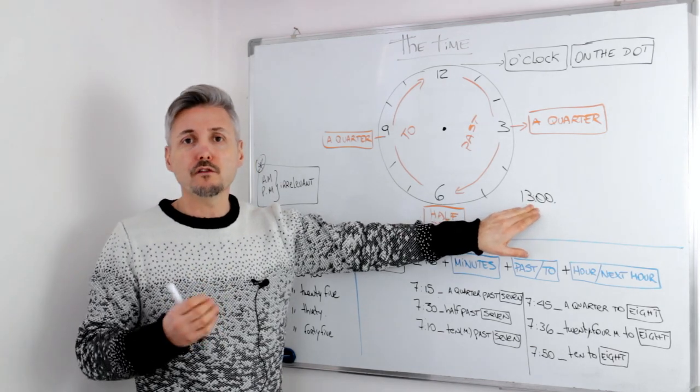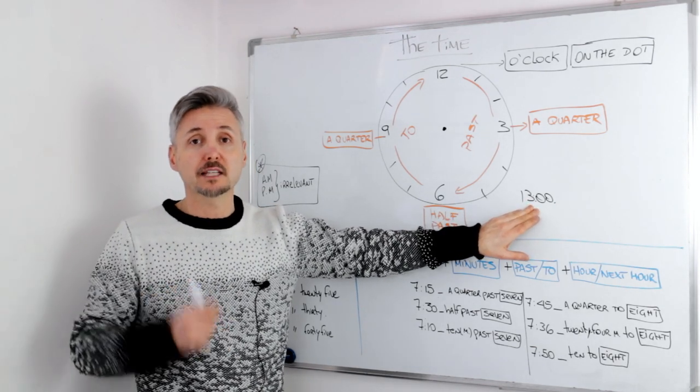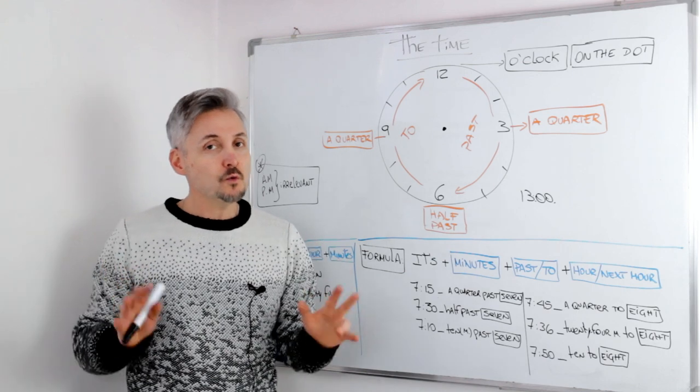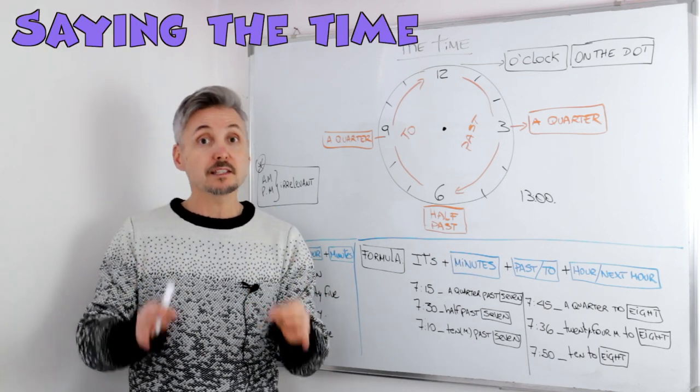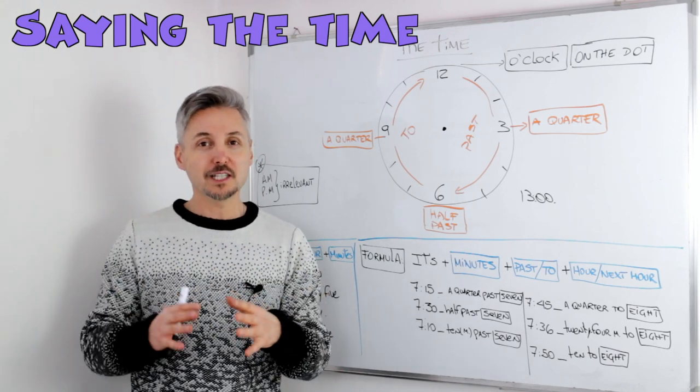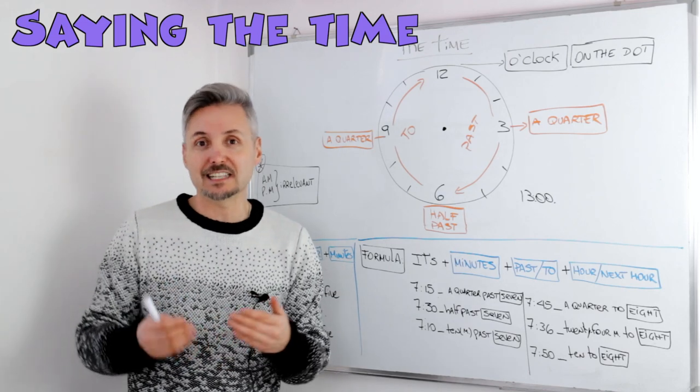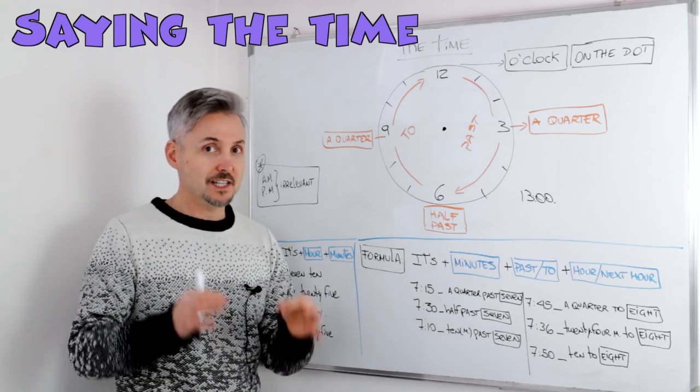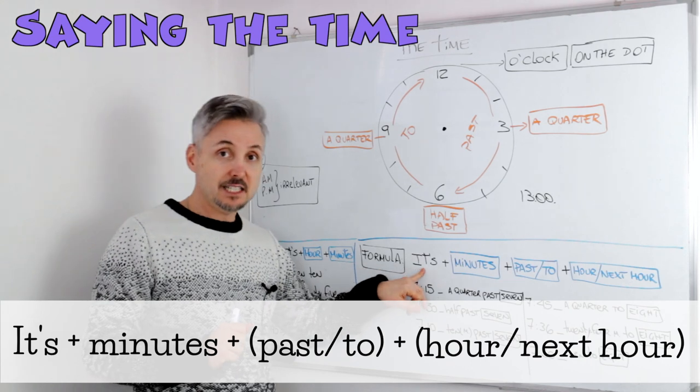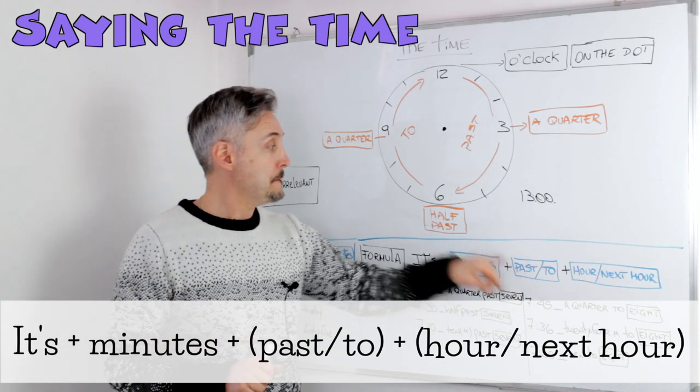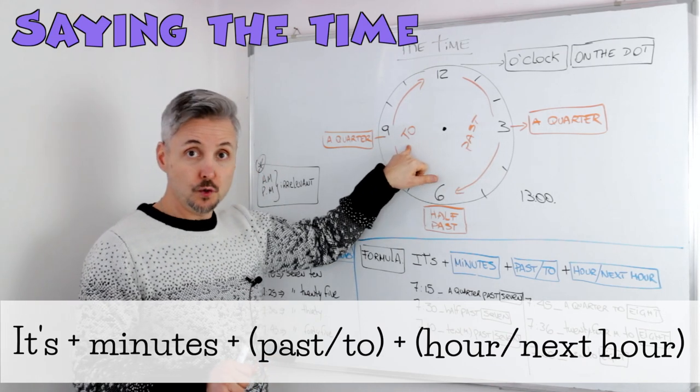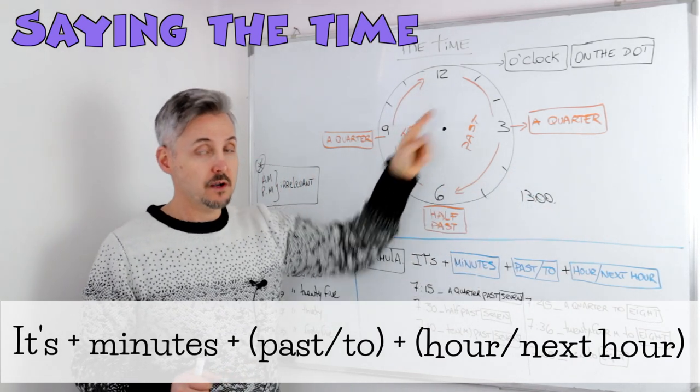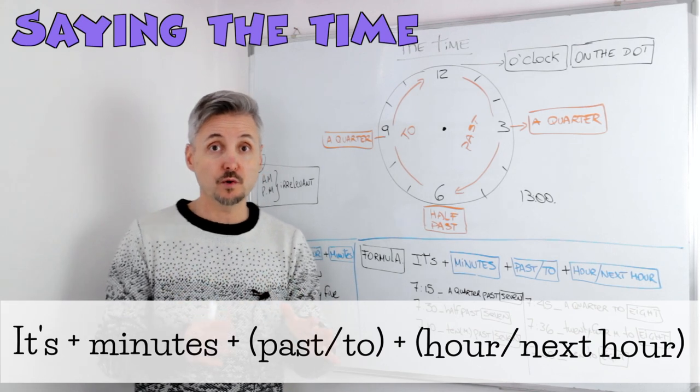Now, another thing that I want to say about the time is that sometimes people use 1300 or it's 13 o'clock. Sometimes it's possible to say that, and it's mainly used for schedules, for train schedules, for airplane schedules, etc. And this is used in Europe. Now, there are two ways of saying the time. I'm going to show you first the most difficult one, the one that students have problems with, and then I'm going to show you the easiest one, and you can choose which one to use.